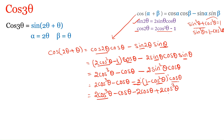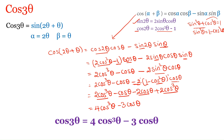Combining: 2 cos³θ + 2 cos³θ = 4 cos³θ. The remaining cos θ terms: −cos θ − 2 cos θ = −3 cos θ. Therefore, the formula for cos 3θ is: cos 3θ = 4 cos³θ − 3 cos θ.